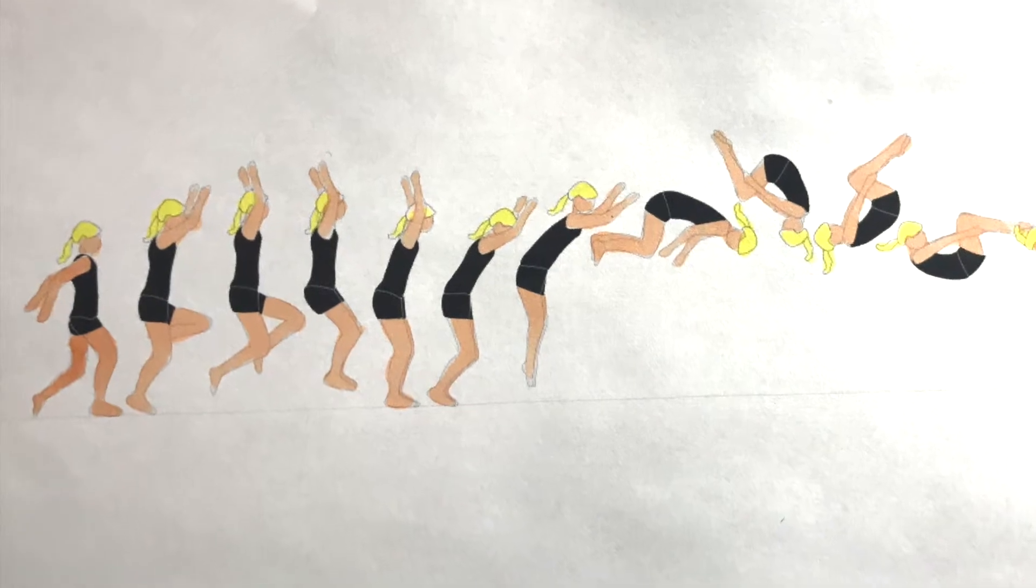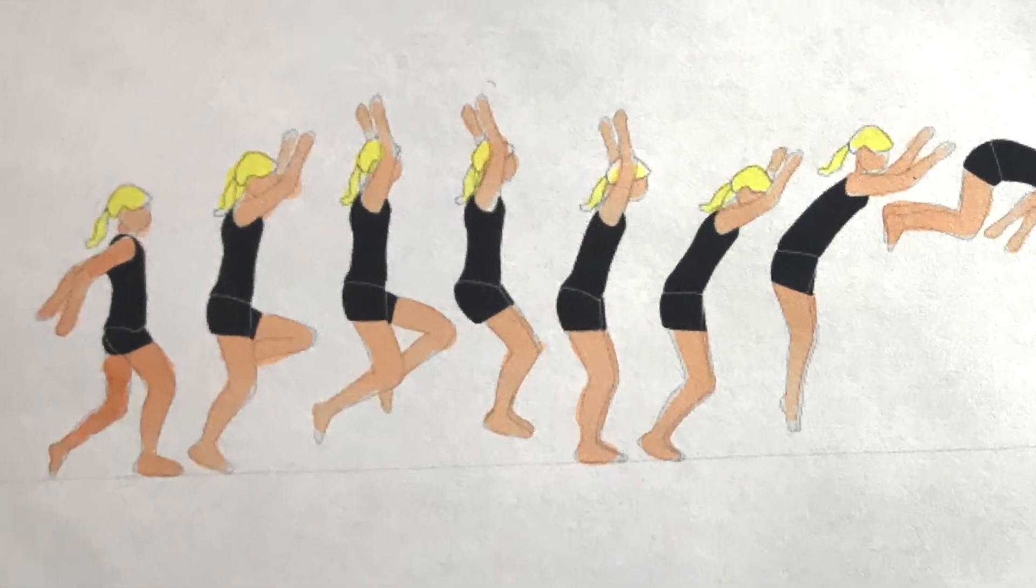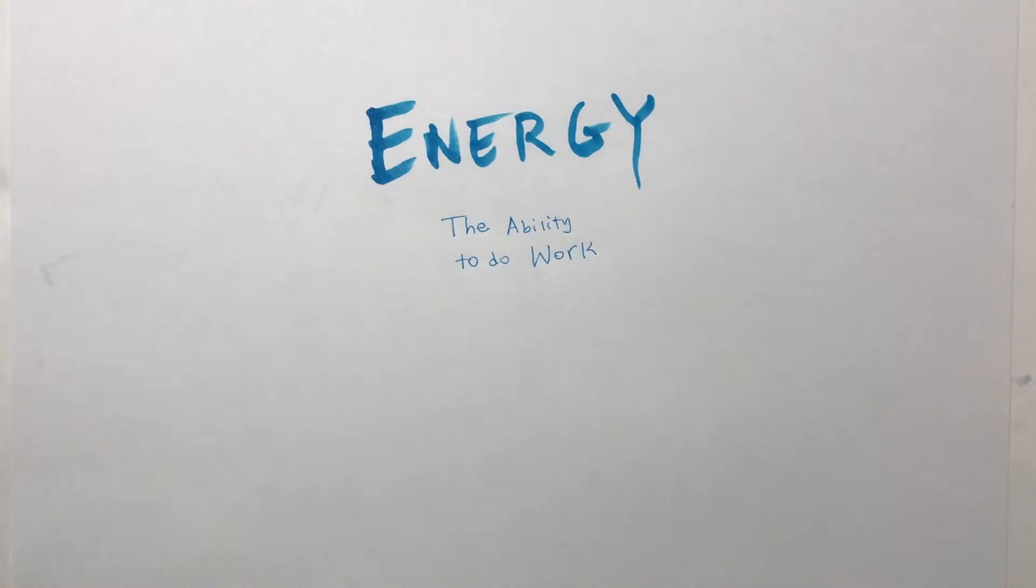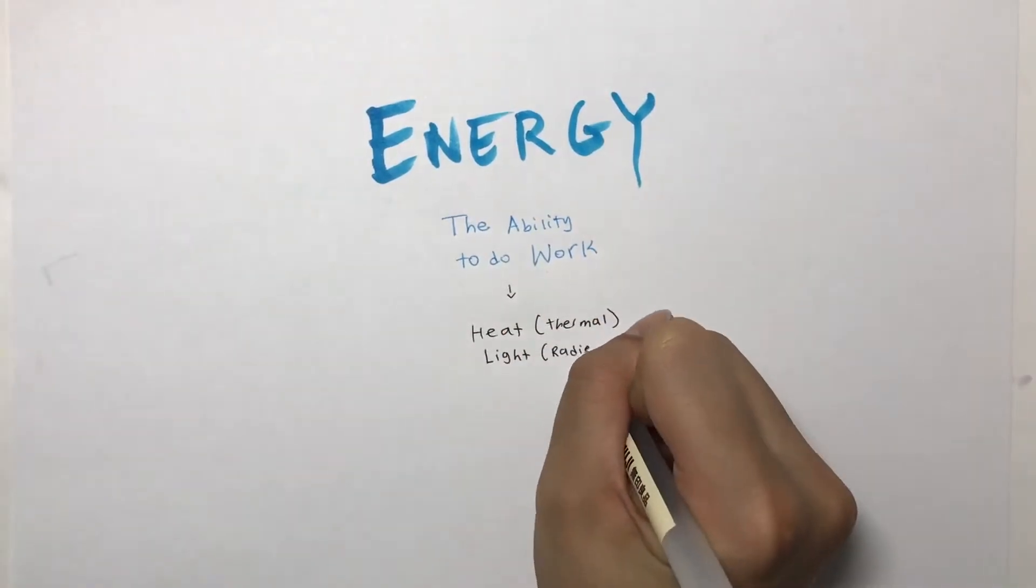In the first section, the gymnast starts running. Here, she is gaining energy and momentum. Let's look at energy. Energy is the ability to do work, and there are multiple types of energy.